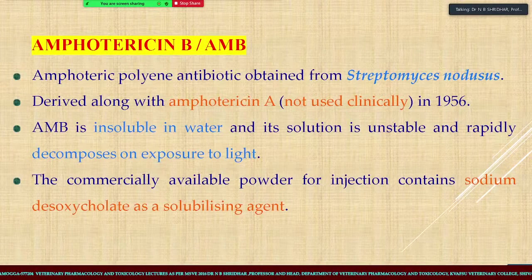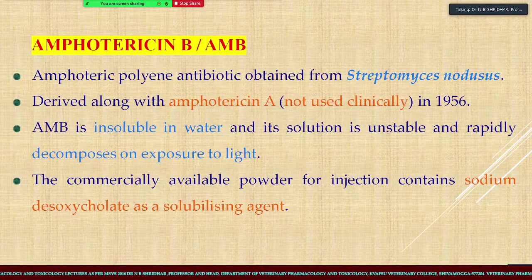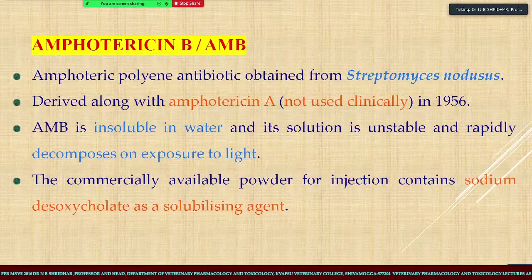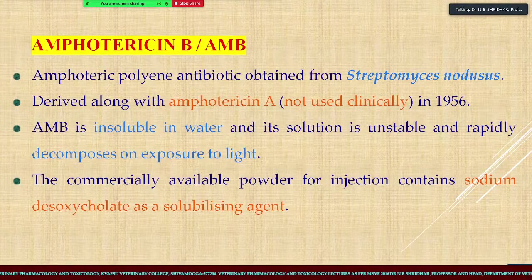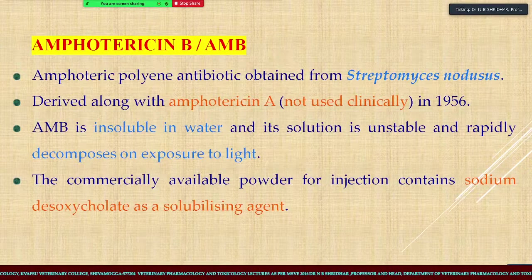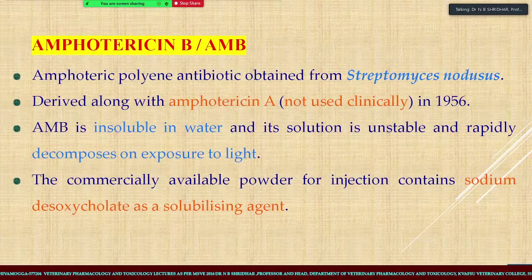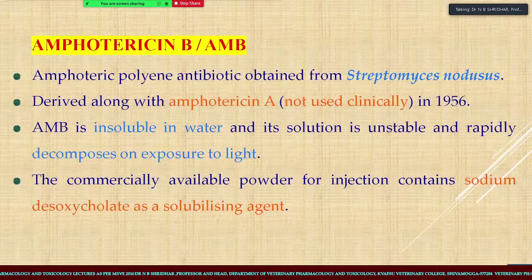We were learning about Amphotericin B, a drug very commonly used as one of the important antifungal drugs, including for the recent mucormycosis. Amphotericin B is an amphoteric polyene antibiotic obtained from Streptomyces nodosus. It is derived along with Amphotericin A and not used chemically. Clinically used since 1956, it is one of the oldest drugs. It is insoluble in water, slightly unstable, and is rapidly decomposed on exposure to light.